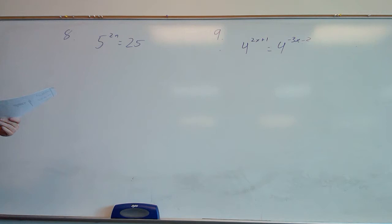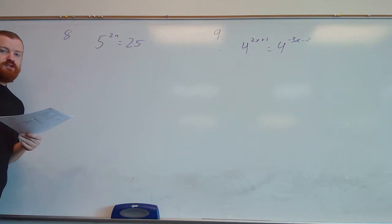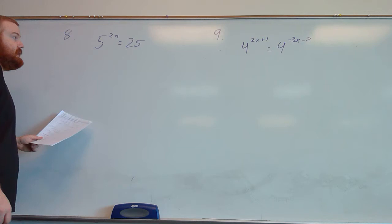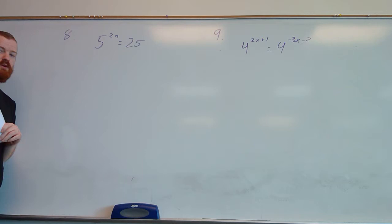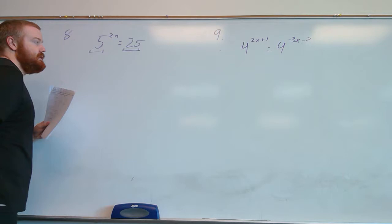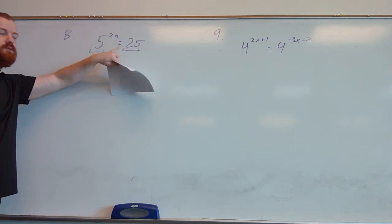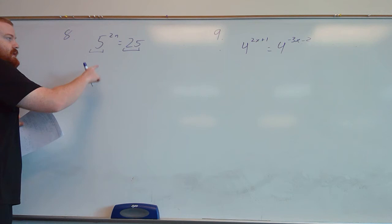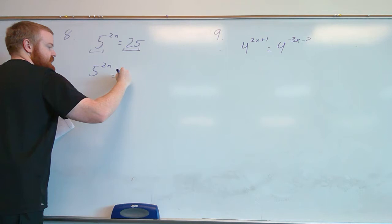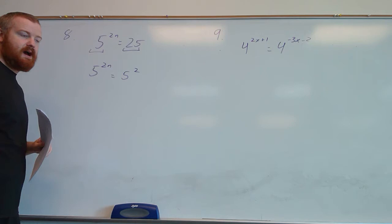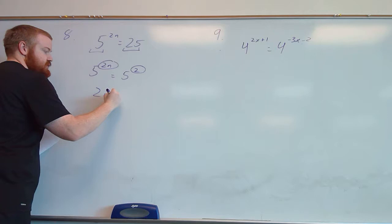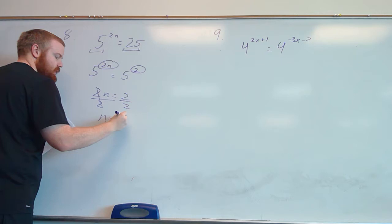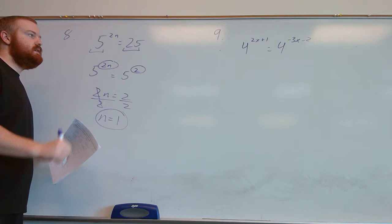Now we're solving exponential equations — examples 8 and 9. With exponential equations, we don't have to worry about plugging solutions back in. If the bases aren't the same, we try to convert them to the same base. Here the bases are 5 and 25. We can rewrite 25 as 5 squared, giving us 5 to the 2n equals 5 to the second. Now that the bases are the same, we set the exponents equal: 2n equals 2, then divide by 2, giving us n equals 1.